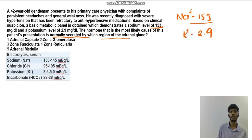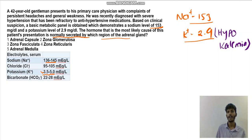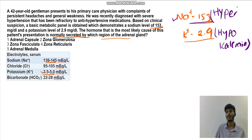Normal sodium level is 136–145, chloride is 95–105, potassium is 3.5–5.0, and bicarbonate is 22–28. The patient's potassium is 2.9, which is below the normal range of 3.5–5.0, indicating hypokalemia. The sodium level is 153, which is above the normal of 145, so the patient has hypernatremia. The patient is having hypernatremia with hypokalemia.